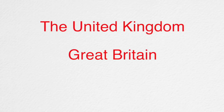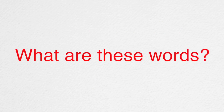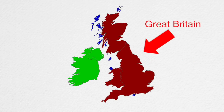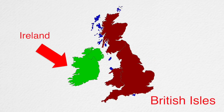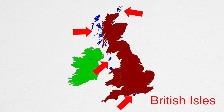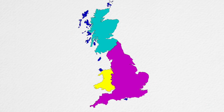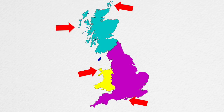The United Kingdom, Great Britain, England. What are these words? What do they mean? Great Britain is the largest island of the British Isles, along with the island of Ireland and a bunch of smaller islands. Great Britain is divided into three countries: Scotland, Wales, and England, all of which own islands of the British Isles outside of Great Britain.